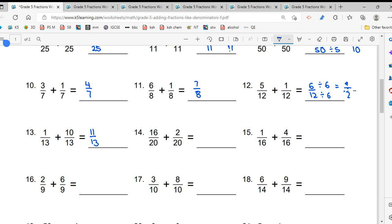Next one, 18 upon 20. Ab dono 2 se divide ho sakta hai. 2 se divide ho sakta hai. To 2 se agar meinne ooper ko divide kiya, Niche ko divide kiya, To kitna ha gya? 9 upon 10.